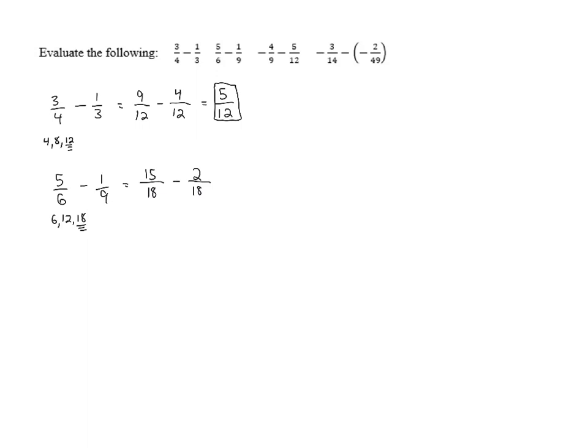And now we can subtract the numerators. 15 minus 2 is 13. And we keep the same denominator, leaving us with 13/18. Let's move on to the next one.